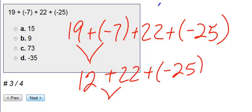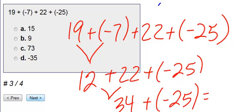Then I'm going to do positive 12 and positive 22. We're just adding those together. We get positive 34. We have negative 25 left. We have more positives than negatives, therefore we know it's going to be positive. 34 and negative 25 give me positive 9. Therefore, our answer should be B.